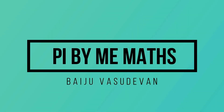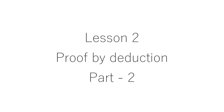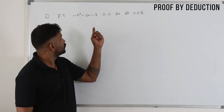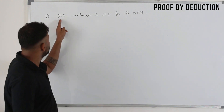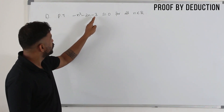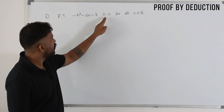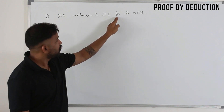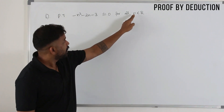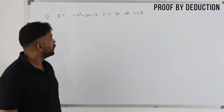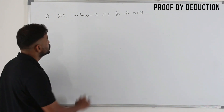Hi, welcome back to my channel. Look at this question: prove that minus n squared minus 2n minus 3 is always negative for all n belonging to R, the set of all real numbers.